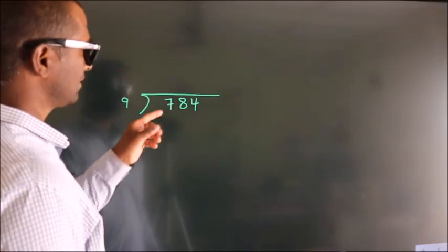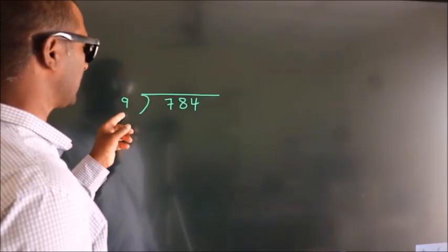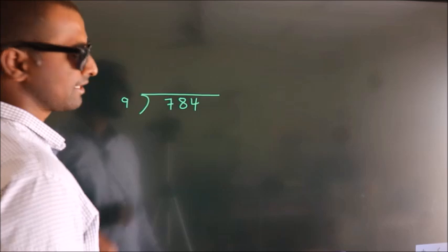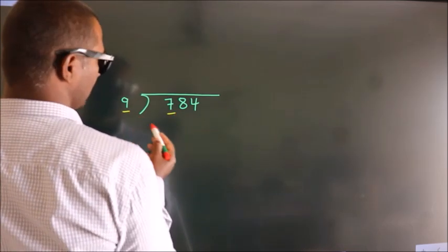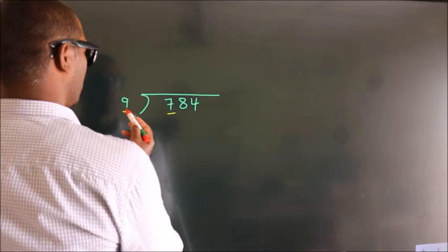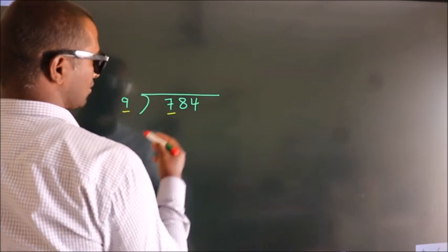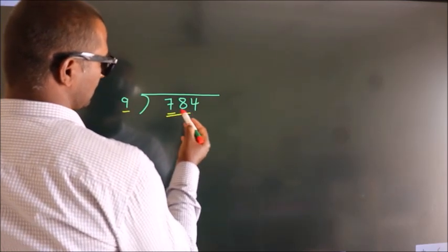How to divide 784 by 9? See, here we have 7, here 9. 7 smaller than 9. So we should take two numbers, 78.